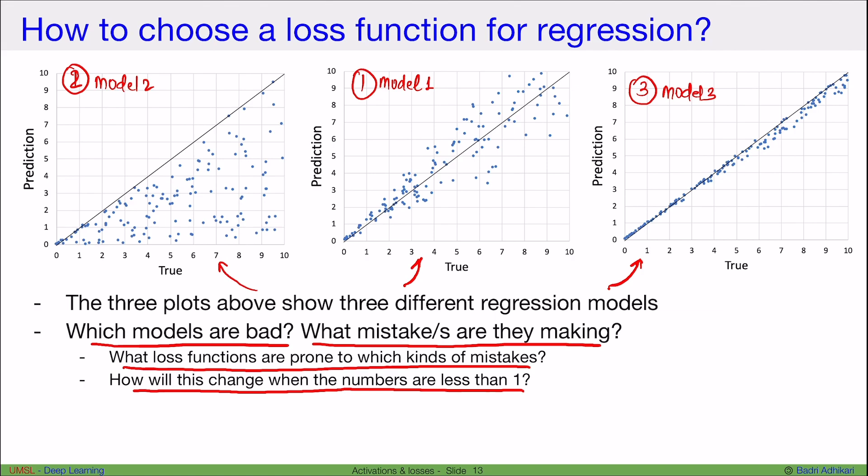So let's try to answer this one by one. Which of these models are bad? So clearly, the third model here is a really good model because we see that most of the values are in the diagonal, very close to the diagonal. So these are really good predictions. Whereas this model right here, model number 2, is of course a bad model because many of the points are away from the diagonal. But we can also see a pattern here. Most of the values or all the values are below the diagonal. What this means is our model always likes to predict smaller values.